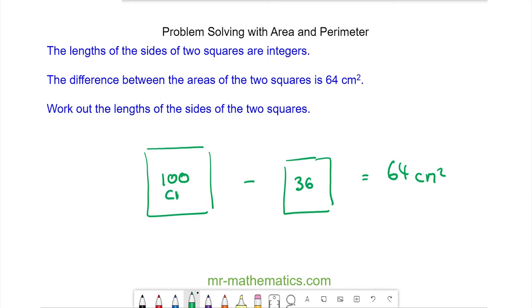So to make this square have an area of 100 centimetres squared, we need to do the square root of 100, which is 10. And to make it have an area of 36 centimetres squared, we need to do the square root of 36, which is 6. So the two lengths are 10 and 6 centimetres.